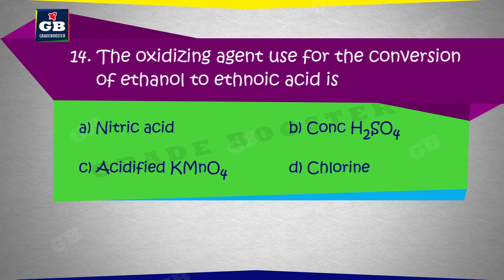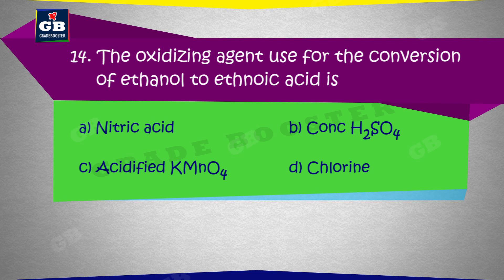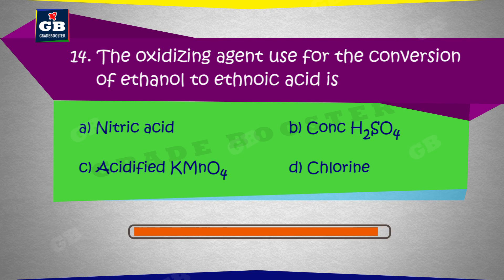The oxidizing agent used for the conversion of ethanol to ethanoic acid — kaun sa oxidizing agent ethanol ko ethanoic acid mein badalne ke liye upyog karta hai: a) Nitric acid, b) Concentrated H2SO4, c) Acidified KMnO4, d) Chlorine.